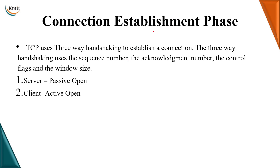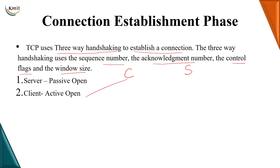In the connection establishment phase, TCP uses a mechanism called three-way handshaking to establish a connection. The three-way handshaking uses the concept of sequence numbers, acknowledgement numbers, the control flags of the TCP segment, and the window size. If we are establishing a connection between a client and a server, we say that a client is active open and a server is passive open.